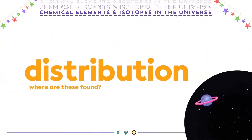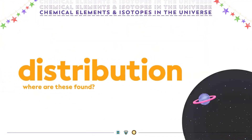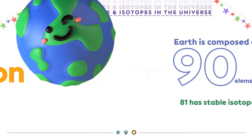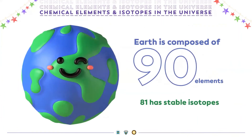Earth is composed of 90 chemical elements, of which 81 have at least one stable isotope. Most of these elements have also been detected in stars and traveled in planets such as the Earth.